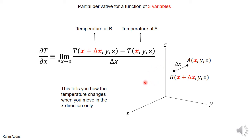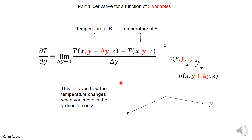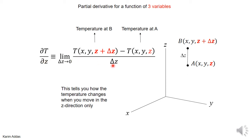Partial T by partial x tells you how the temperature changes when you go in the x direction only. For partial T by partial y, start at point a with x, y, z coordinates, move only in the y direction to y plus delta y, keeping x and z constant. Get the value at b, subtract the value at a, divide by delta y, and let delta y go to zero — this gives how the temperature changes in the y direction. Similarly, partial T by partial z: start at point a, move only in the z direction a distance delta z, keeping x and y constant, and take the limit as delta z goes to zero.